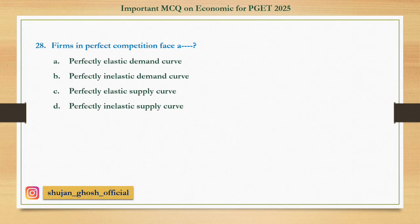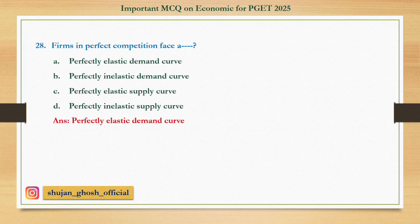Question number twenty-eight: Firms in perfect competition face a — option A: perfectly elastic demand curve; B: perfectly inelastic demand curve; C: perfectly elastic supply curve; D: perfectly inelastic supply curve. Answer: perfectly elastic demand curve.